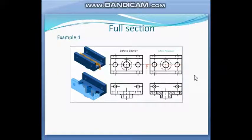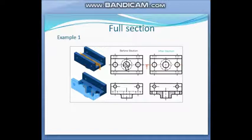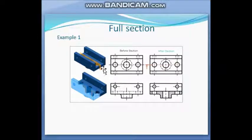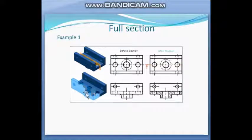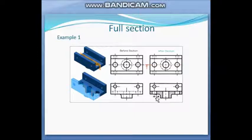Suppose there is an example — this is the actual object. Before the section, we draw the front view and top view, and we see there are lots of dashed lines. Now a cutting plane — shown in yellow — cuts the object into two parts. The first part is removed, and then we visualize the object from this side to get the sectional view. There is no hidden line or dashed line in this view — only hatch lines — and the dashed lines have been omitted.